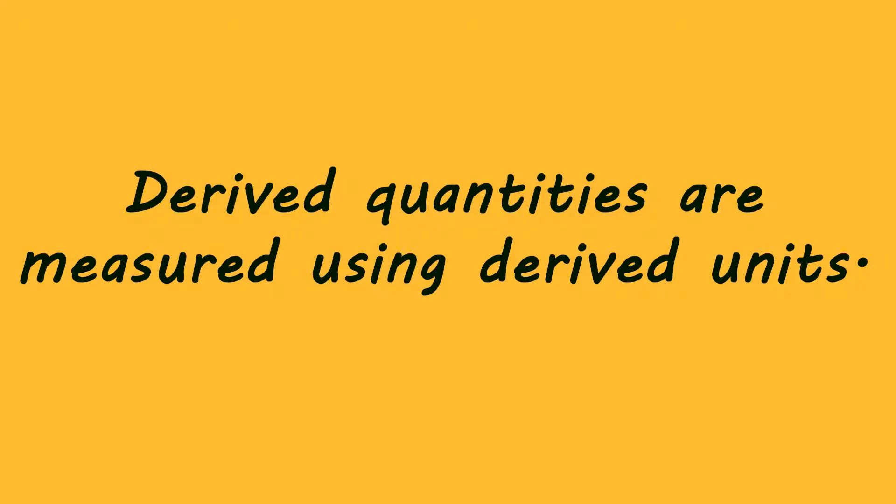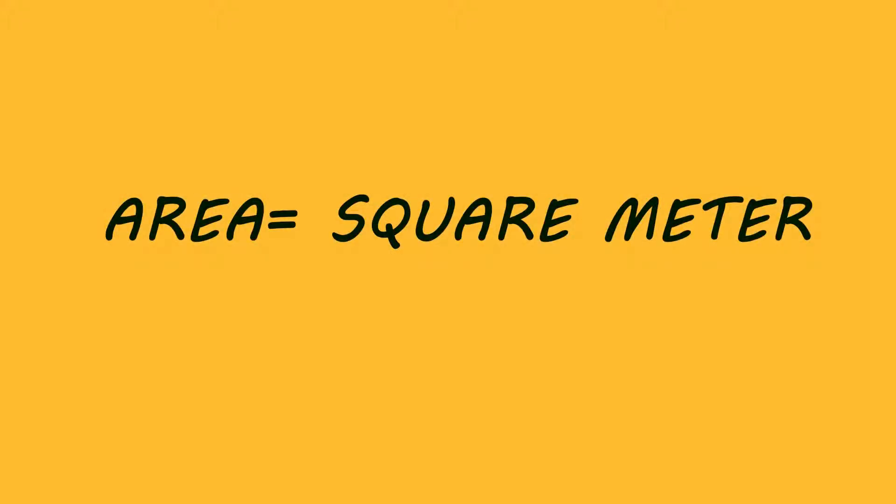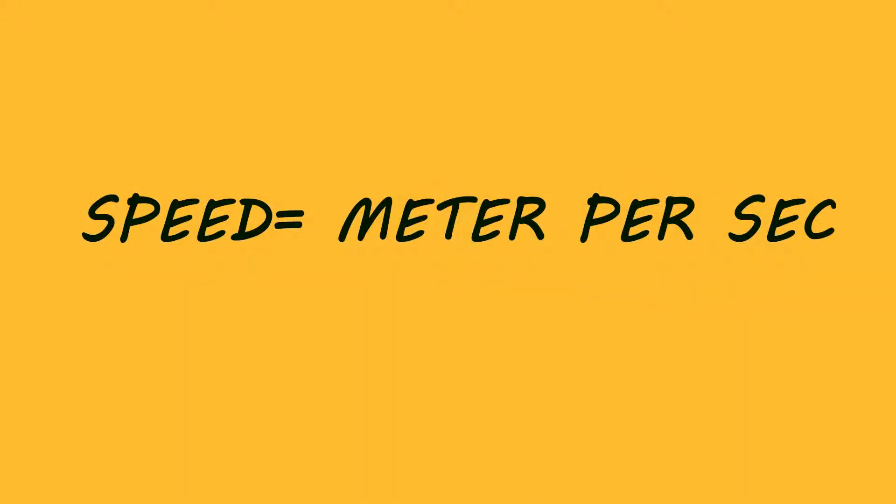Derived quantities are measured using derived units. For example, derived unit of area is square meter. Derived unit of speed is meter per second.